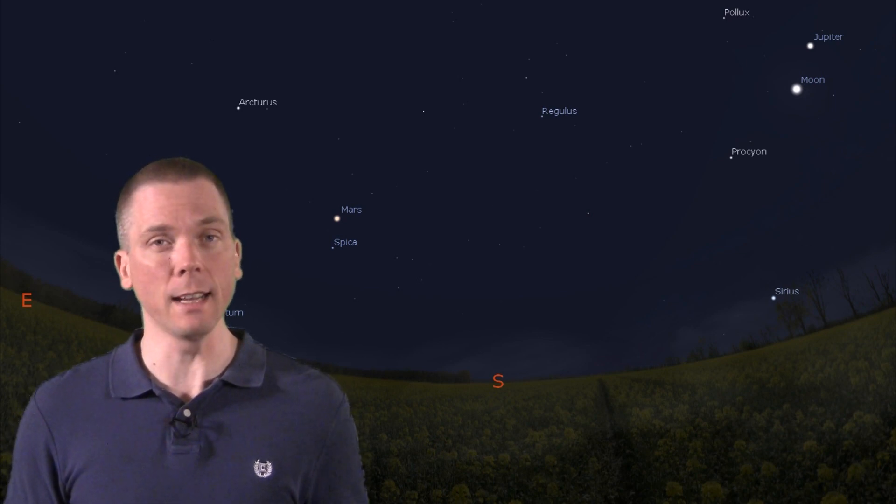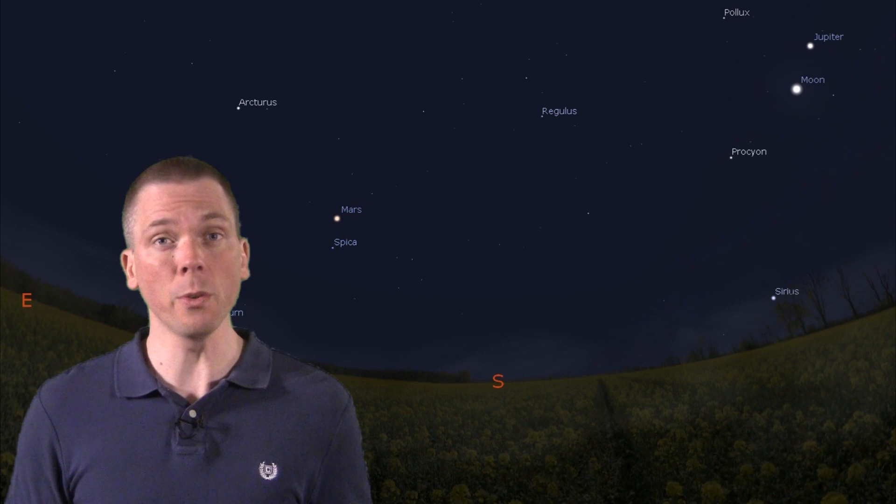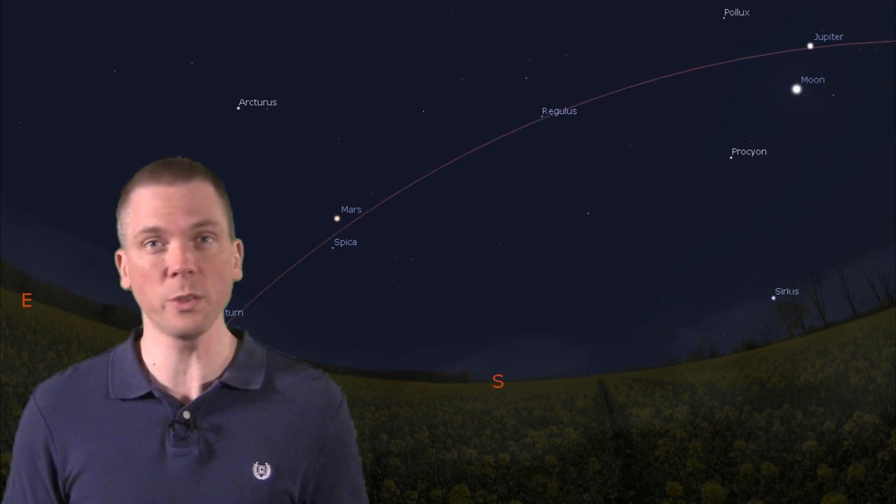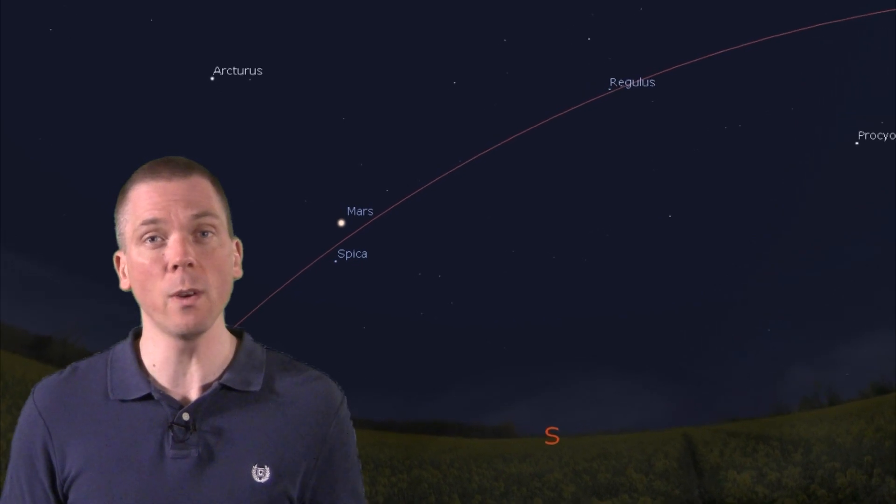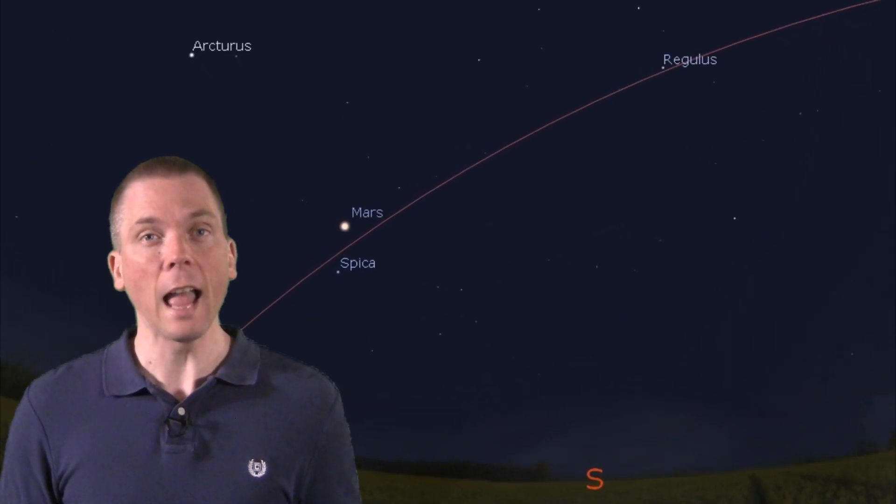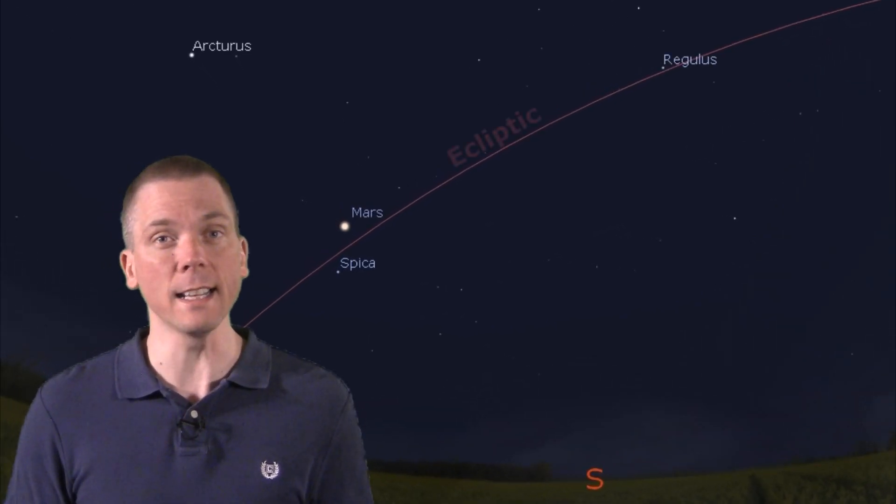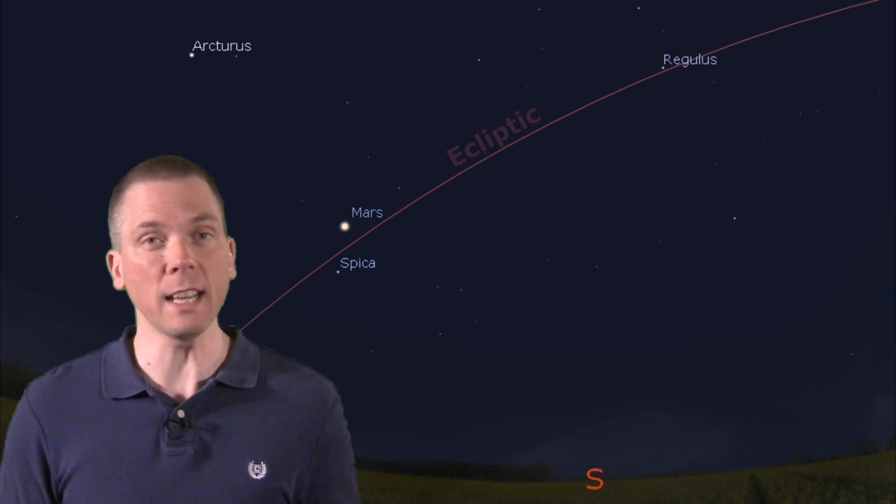The ecliptic is the imaginary line in the sky that the Sun appears to traverse as Earth revolves around our host star. Because the solar system is largely on the same plane, most of the major planets and our moon also appear along this line or close to it. In spring, the two first magnitude stars Regulus in Leo and Spica in Virgo helpfully show where this line is, from south towards the east in the evening.